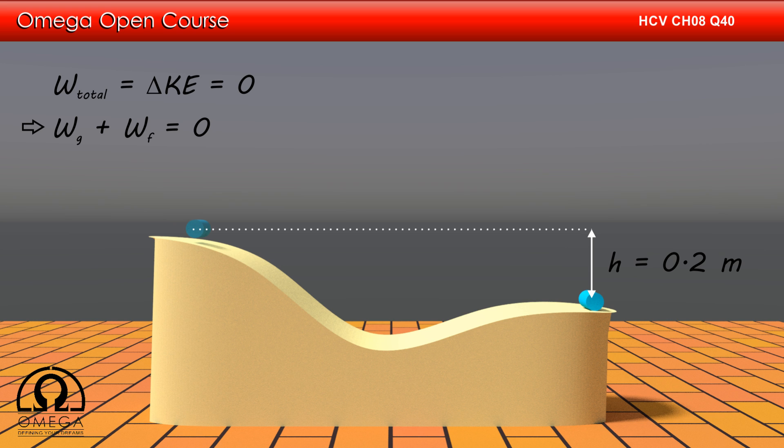The forces doing work on the block are gravity and friction. Therefore, the work done by gravity must be cancelled out by the work done by friction.